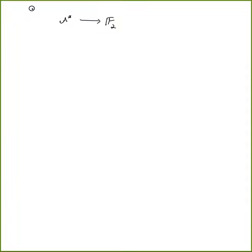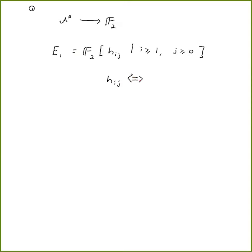The reason the May spectral sequence is nice is that it has a particularly convenient E1 term. The E1 term of the May spectral sequence is just polynomial in H_{ij}, where i is greater than or equal to 1 and j is greater than zero.